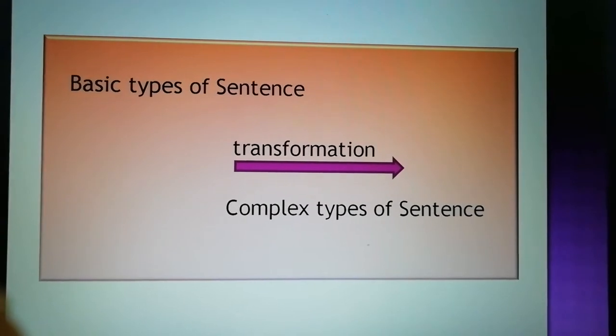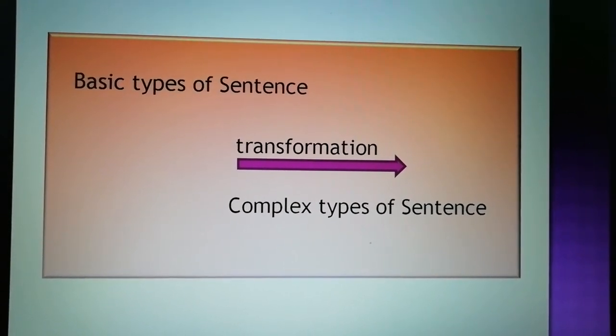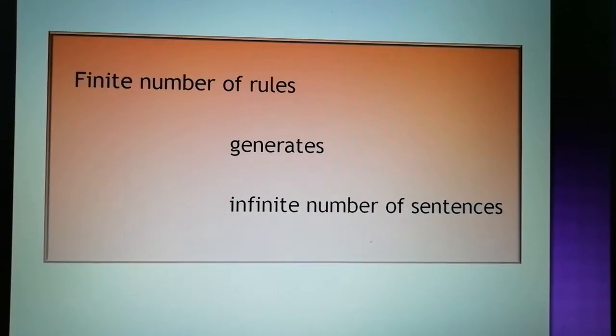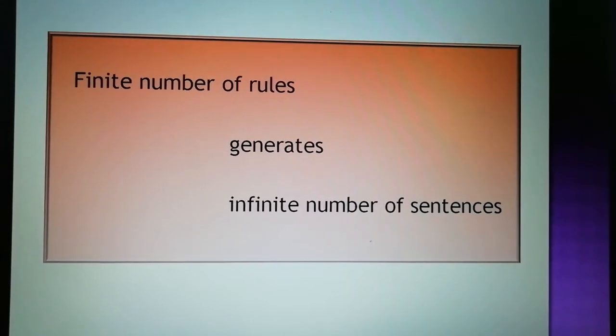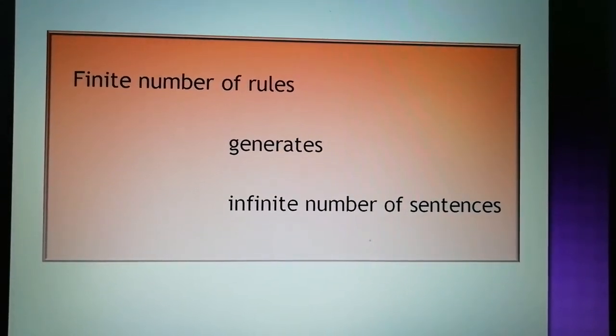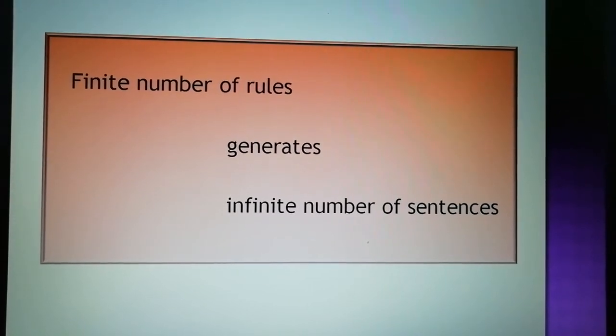Chomsky then explained the second aspect of language, the generative aspect, by stating that the output—the unlimited number of potential utterances of any language—is not the same as the input—the limited number of utterances to which any speaker is exposed.